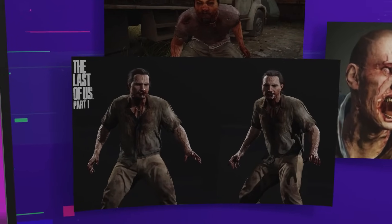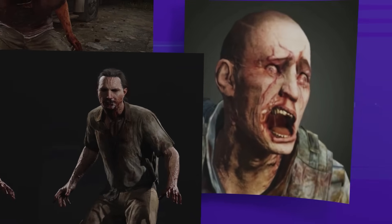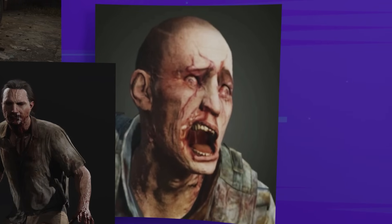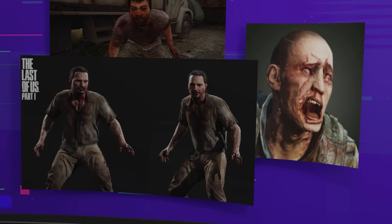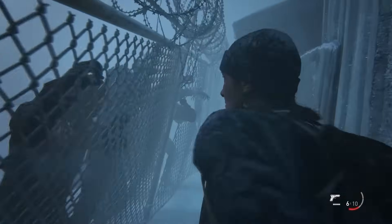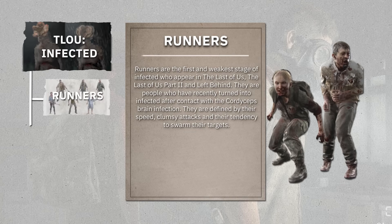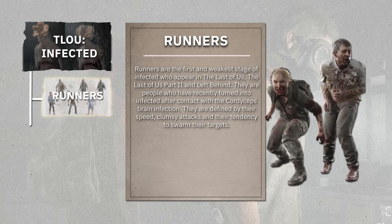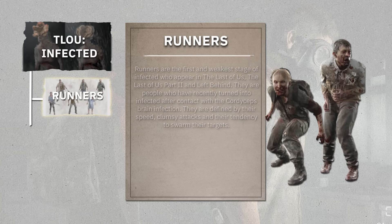Runners are the first stage, typically appearing one to two days after infection. Hosts still look mostly human, with minor fungal intrusion visible under the skin and around the eyes and mouth. However, their behaviour is radically altered — they are hyper-aggressive, disoriented, and driven by an overwhelming urge to attack and spread the infection. Runners move in erratic, twitchy patterns, lunging unpredictably at prey. Some runners sob or scream, a chilling indication that traces of human consciousness may still exist, trapped beneath fungal domination. In groups, runners often behave in semi-coordinated packs, overwhelming targets with sheer numbers. Environmental factors influence their behaviour — in confined spaces they display frantic, chaotic attacks, while in open areas they sometimes hesitate or roam aimlessly, suggesting incomplete neurological override early in infection.